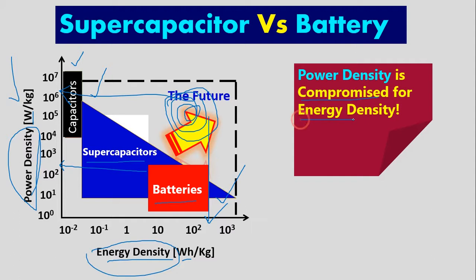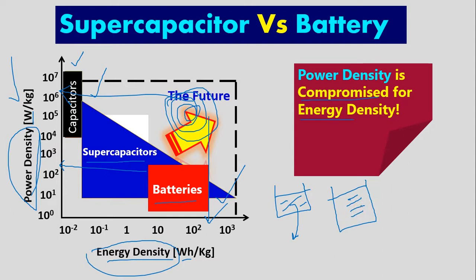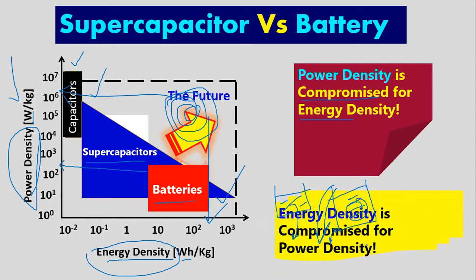Power density is basically compromised by energy density — if you want to increase power density, you do not have enough energy density. Power density means how quickly you deliver current. For example, if you have a small storage and you want to give more current, it will empty very quickly. Energy density is like water storage — if you store something in large quantity and want to release it faster, that stored quantity is energy density, and how fast it flows out is power density.